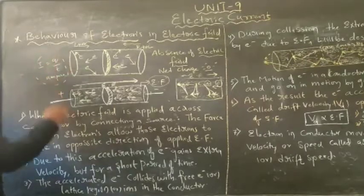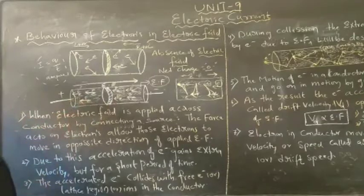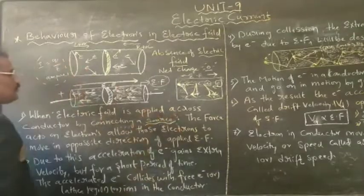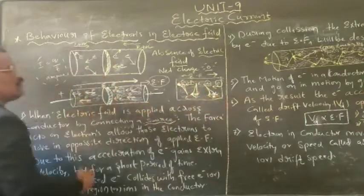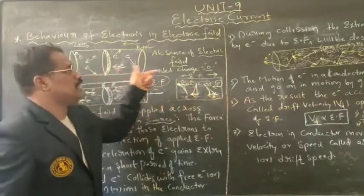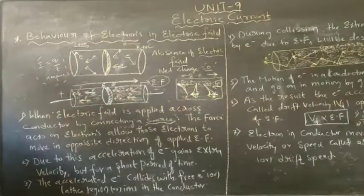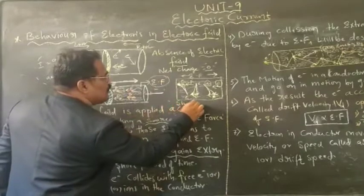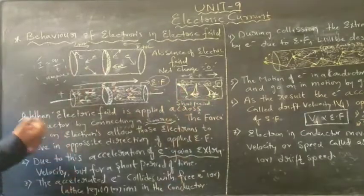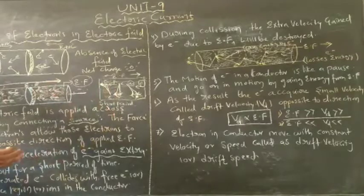Now, when an electric field is applied to a conductor by connecting it to a source, a force acts upon the electrons allowing them to move exactly opposite to the direction of the electric field. As a result, the electron gains extra energy — the electron is accelerated with extra energy for a short period of time.